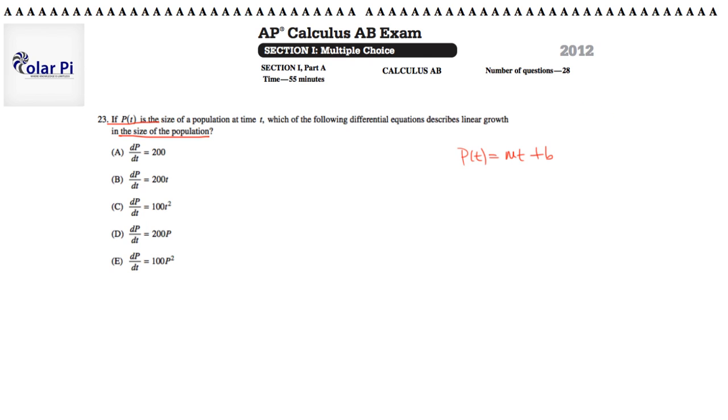Because if p of t, which is the size of the population at time t, could be modeled in the form mt plus b for some constants m and b, then it's clear that it represents linear growth.